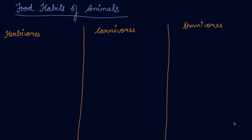In this video we will be studying about the food habits of animals. We know that green plants are the producers whereas animals are not producers. They cannot prepare their own food. They are dependent on the plants or other animals for their food, so they depend directly or indirectly on the plants.